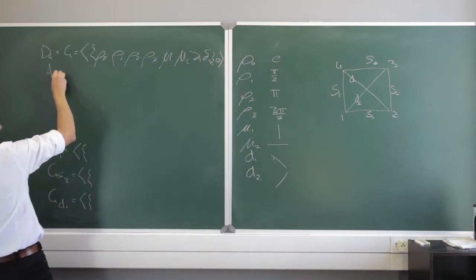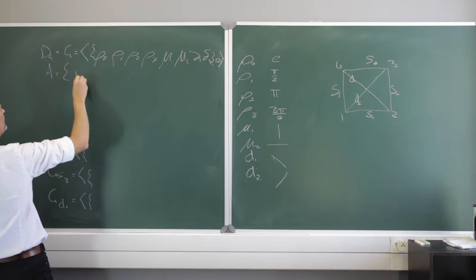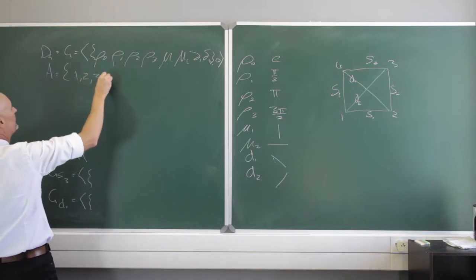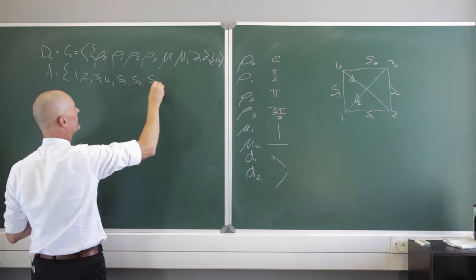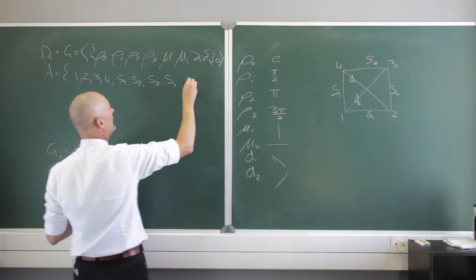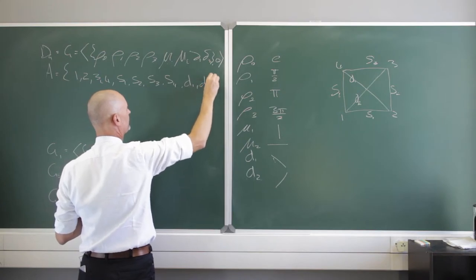And my set A is going to be my corners 1, 2, 3, 4, my sides side 1, side 2, side 3, side 4, and my diagonals 1 and diagonal 2.